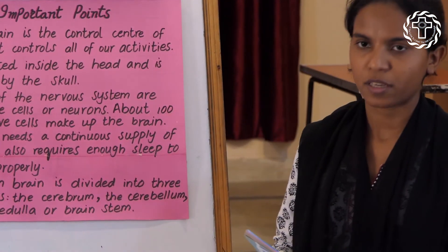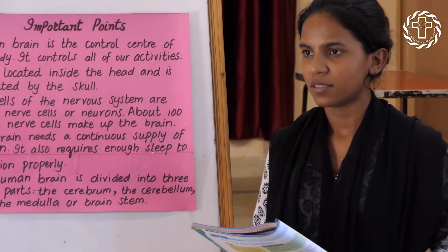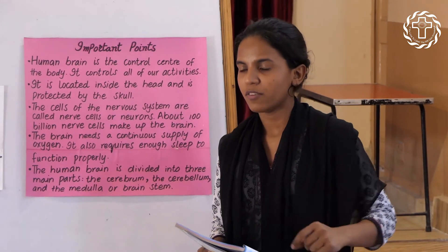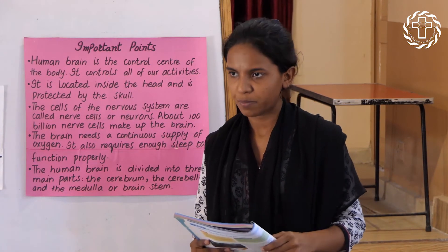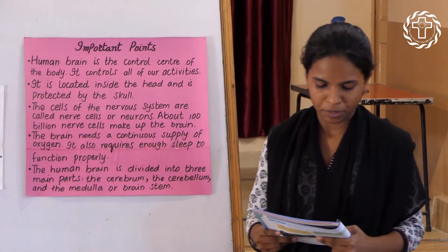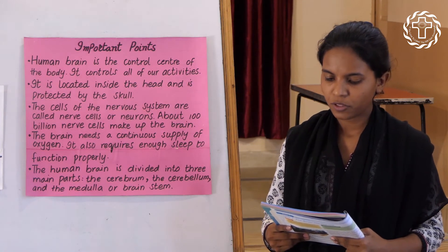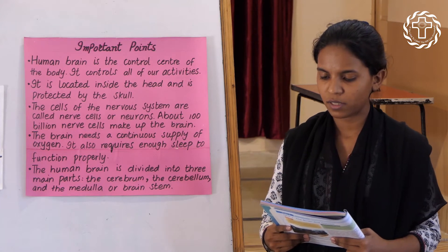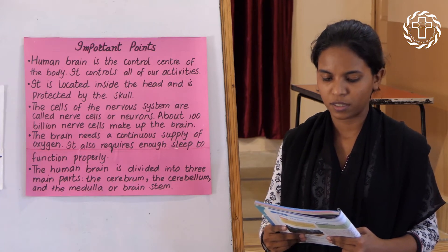What is a spinal cord? The spinal cord is a cord which runs from our backbone — 'spine' means backbone. The human body is made up of trillions of cells. The cells of the nervous system are called nerves and neurons, or nerve cells.